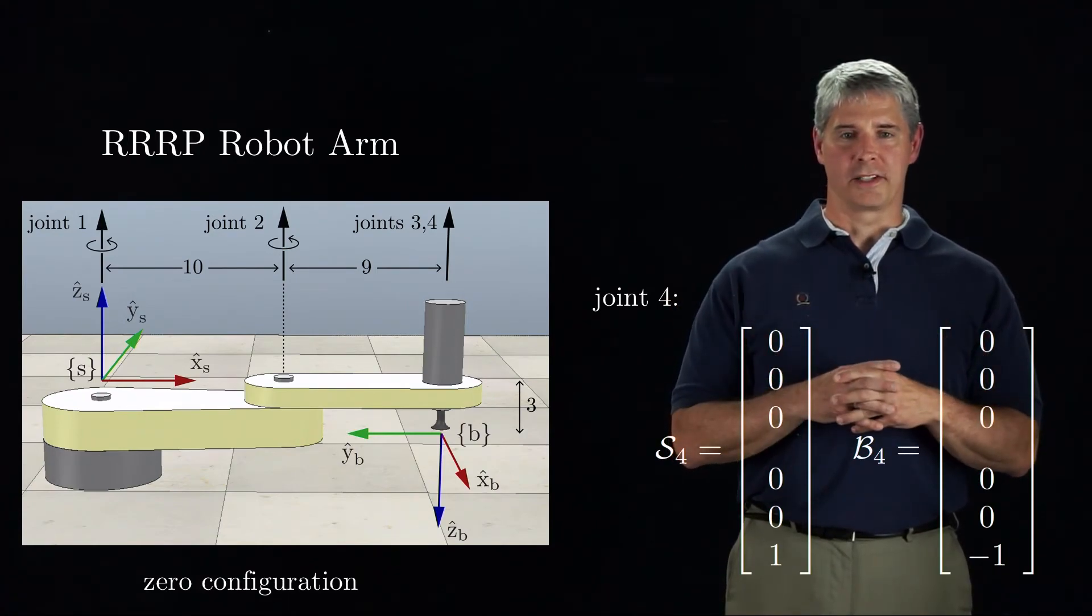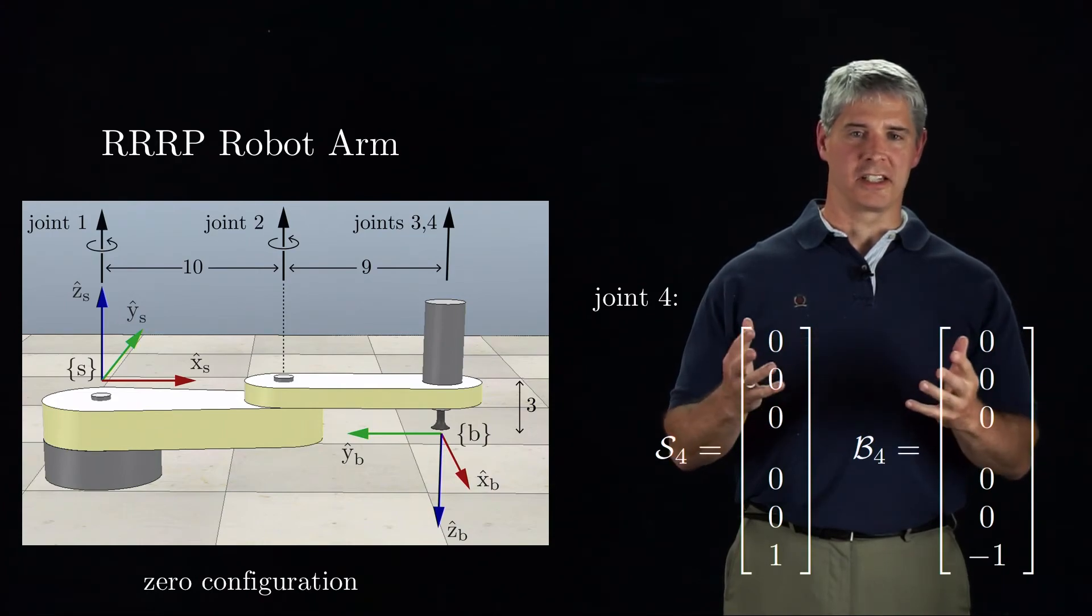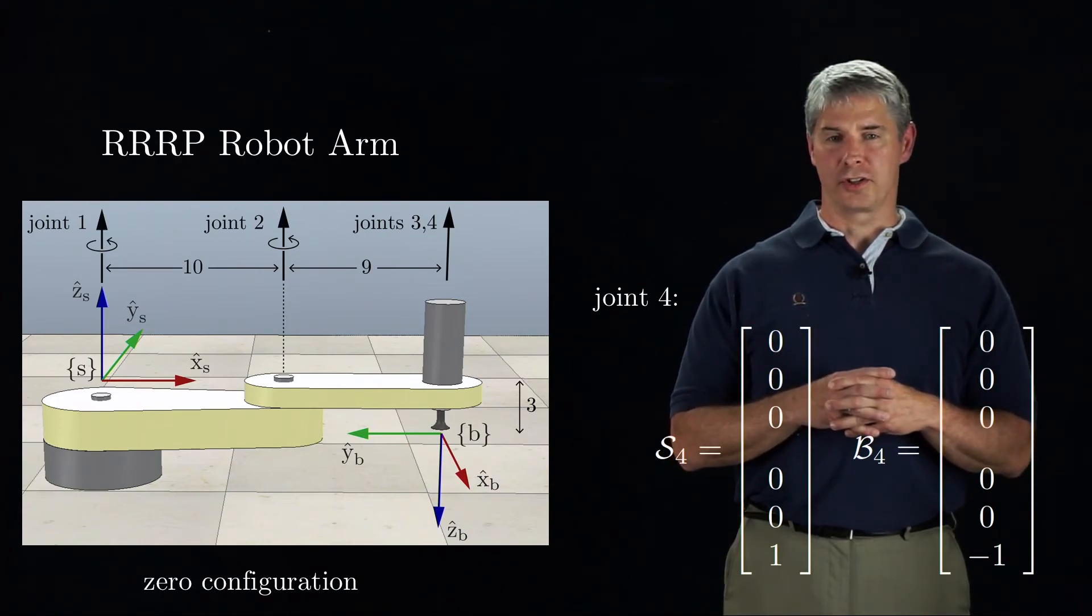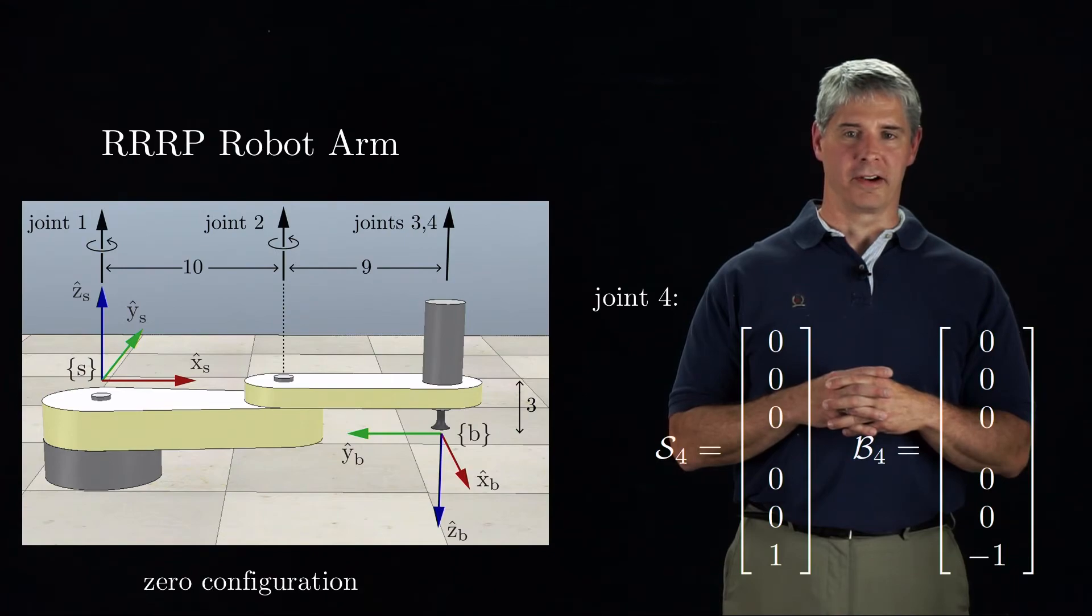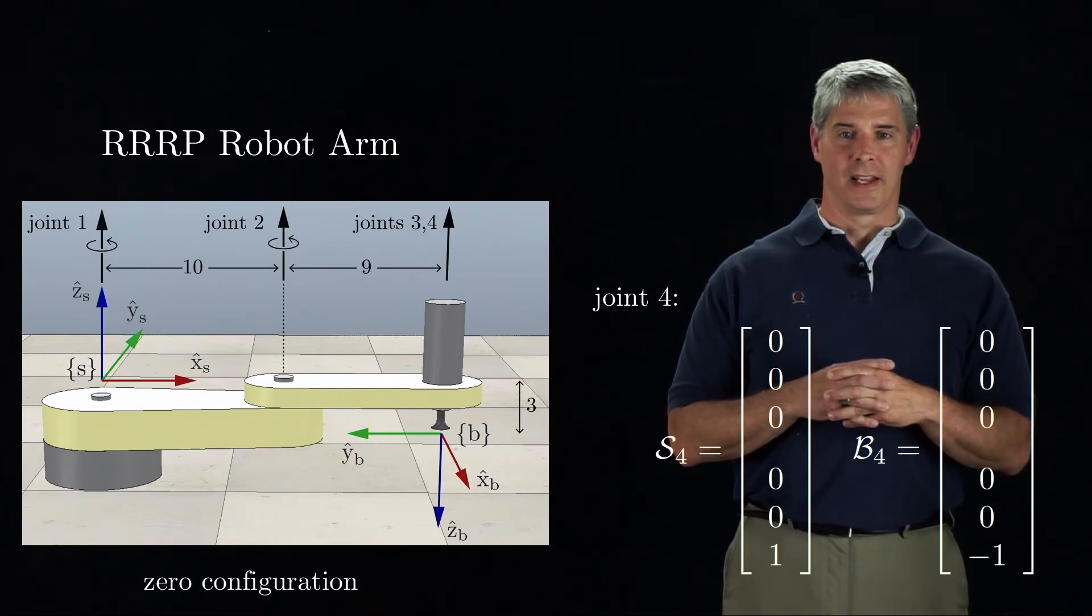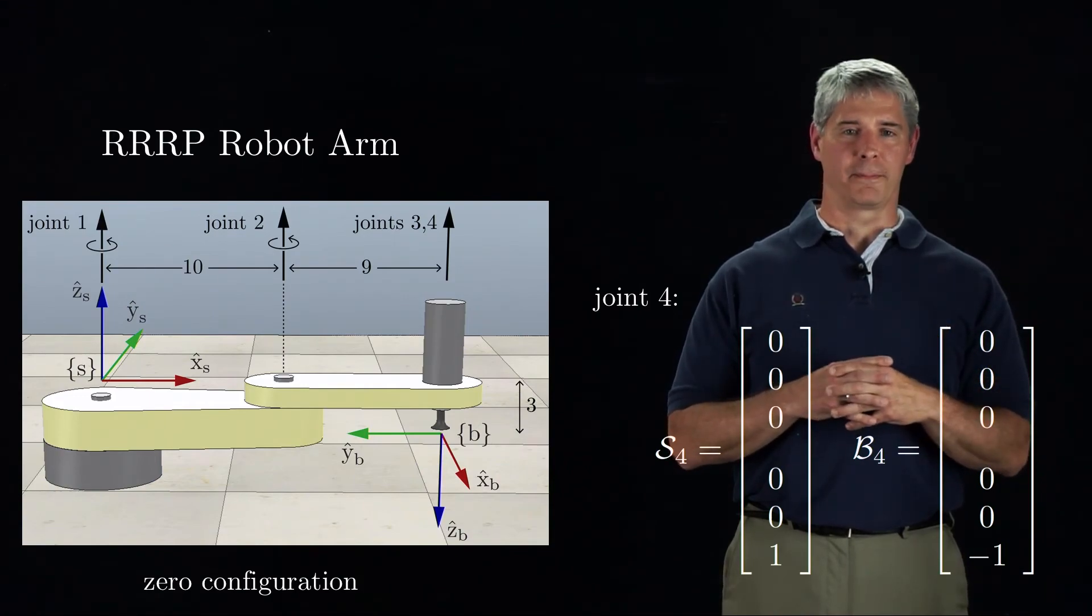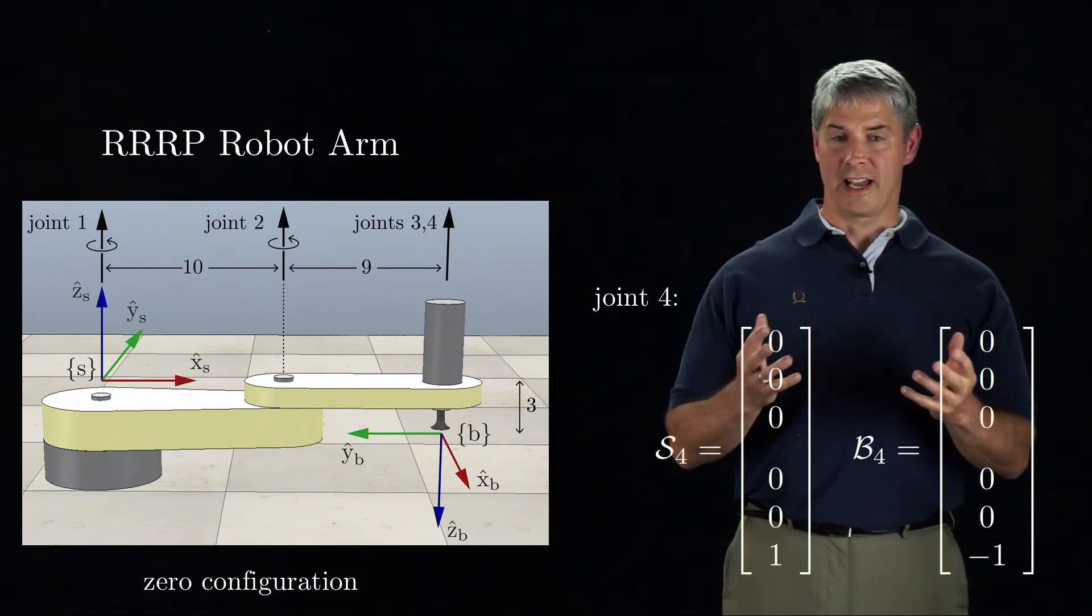For most open-chain robots, deriving the screw axes is just this easy. You can simply look at a good drawing of the robot at its zero configuration and get the screw axes by inspection. If anything is unclear about what we did, you should either pause this video at appropriate places or look at the examples in the book.